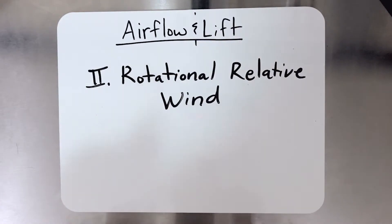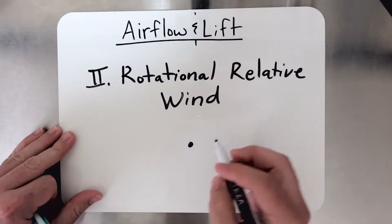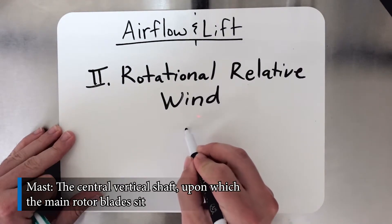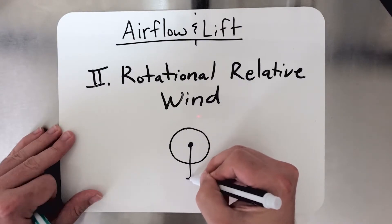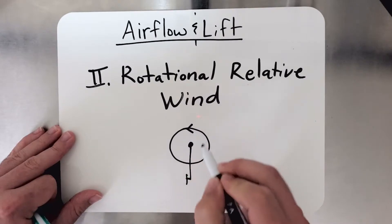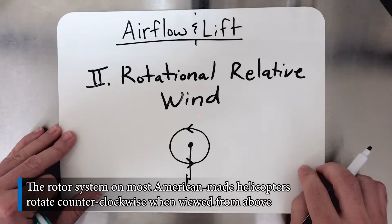So if we were to take a look at the helicopter, here's the mast from the top. The rotor system rotates around it, the tail obviously comes out. So the rotor system, the blades are rotating counterclockwise from the top.